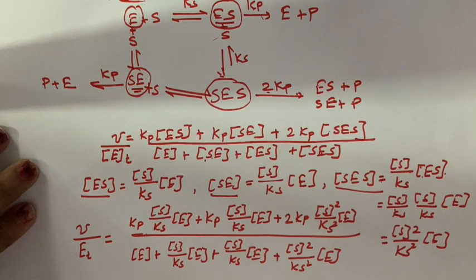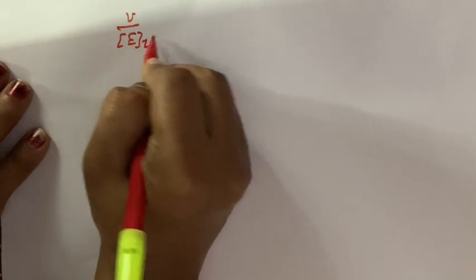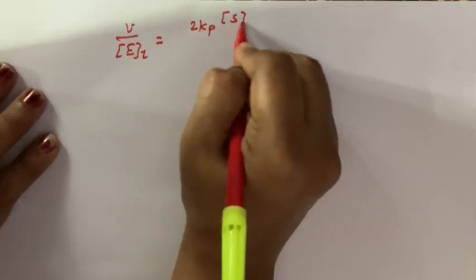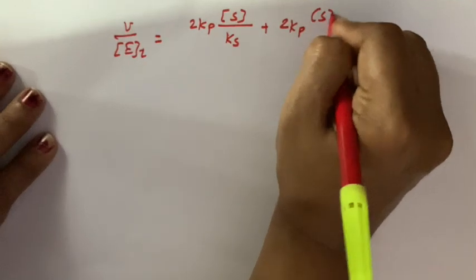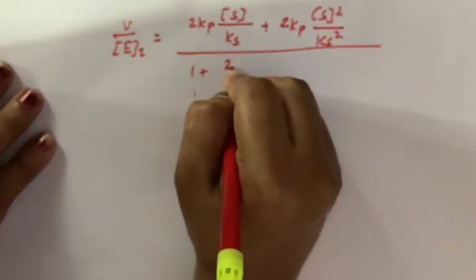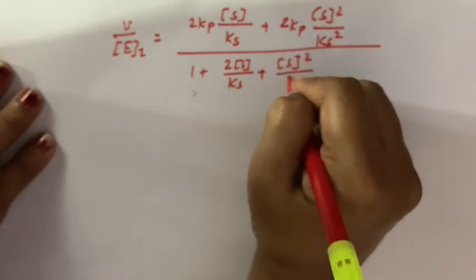When we solve this, the two Kp terms in the numerator give 2Kp×[S]/Ks. So we get: V/Et = (2Kp×[S]/Ks + 2Kp×[S]²/Ks²) / (1 + 2[S]/Ks + [S]²/Ks²).